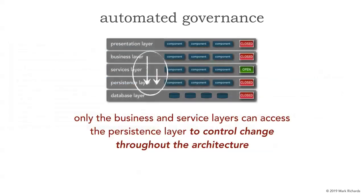Let's take a look at a simple architecture decision. In a traditional layered architecture where we have presentation, business, services, persistence, and database, we have an architecture decision — hopefully documented and justified in an architecture decision record — that only the business and service layers can access the persistence layer to control change throughout the architecture. In other words, we don't want the presentation layer to access the persistence layer or the database directly. Notice we have a closed layered architecture.